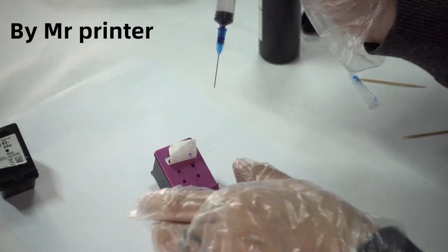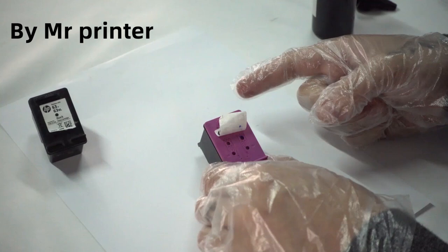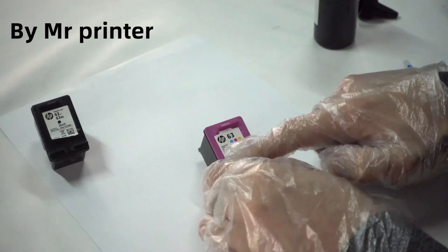And now we can do the same with the other colors and it's easy as that. And always remember to seal the holes with the sticker, otherwise the ink might pour out. And then you leave it here for 10 minutes and wait for the sponge to absorb the colors.